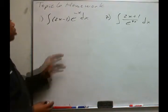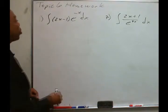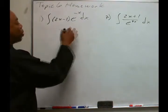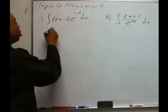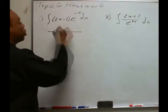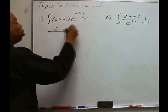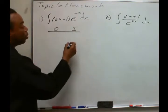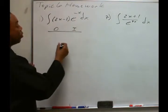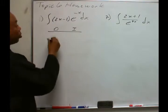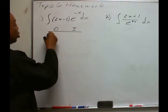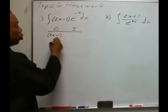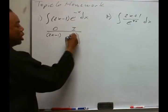Topic 6, homework problems, number 1. We want to solve this by integration by parts. One of these we have to treat as the derivative, the other one we'll take the anti-derivative of. So the polynomial 2x minus 1, we'll start taking derivatives of that.